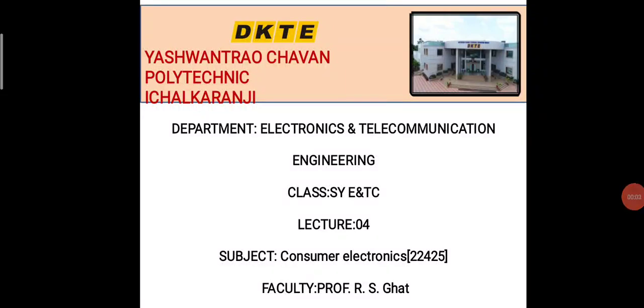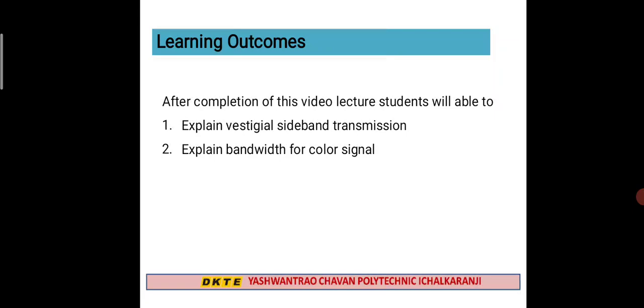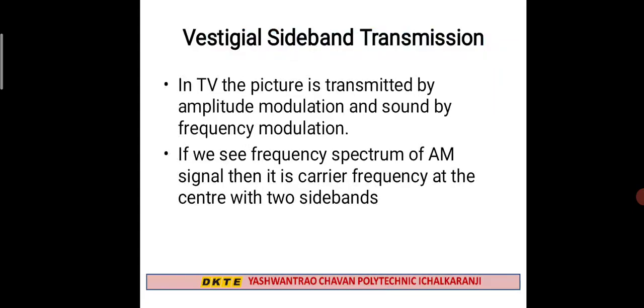Hello students. In the last lecture we have seen the interlaced scanning method. In today's lecture we are going to see the vestigial sideband transmission and bandwidth for a color signal. When you check the picture on the TV, amplitude modulation is used for picture and frequency modulation is used for sound.